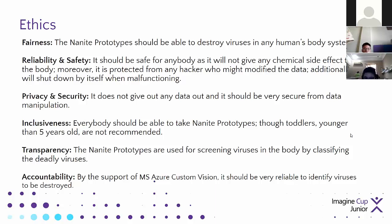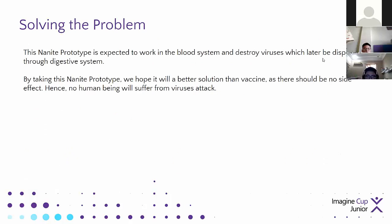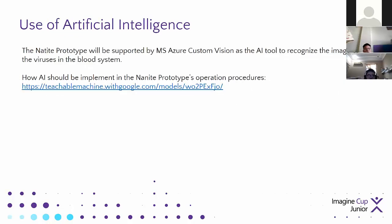Any prototype is allowed to work in the blood system and destroy viruses, which will later be disposed of safely through the digestive system. We hope it will be a better solution than vaccines, supported by MS Azure Custom Vision as the AI tool to recognize images of viruses in the blood system inside the detectable machine.